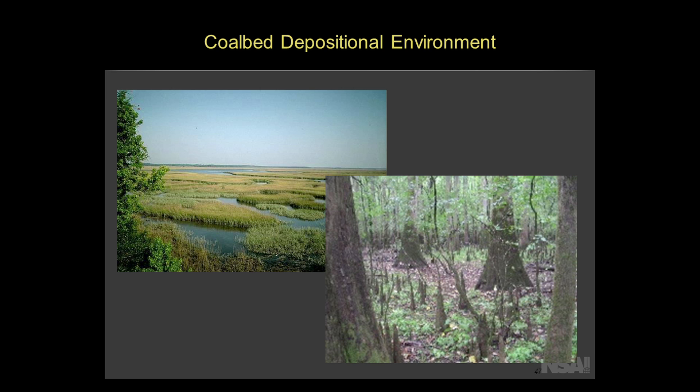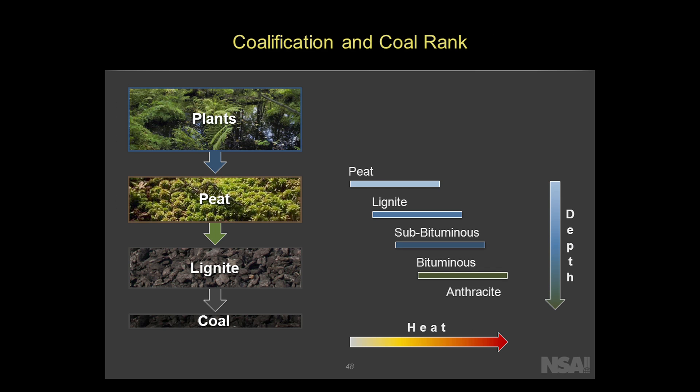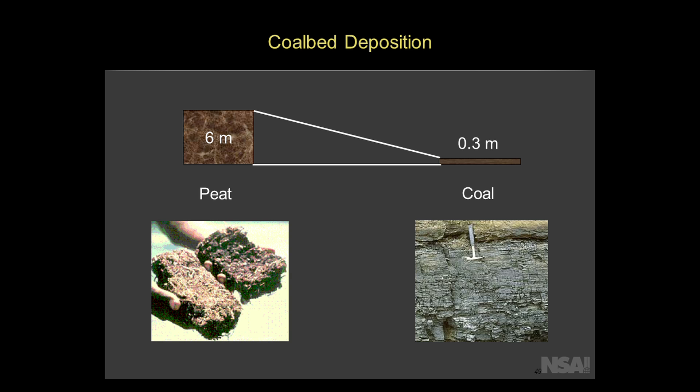Coal comes from vegetation — high carbon material that we see at surface — which is then subsequently buried progressively from plants to peat to lignite to coal. So it takes a lot of time, a lot of pressure, and a lot of depth. There are different types of coal depending on what the depth is and how mature it is. If you take peat, which is the early stage of formation of coal, it may start with six meters, and under the pressure and depth that it's buried, it finishes up at 0.3 meters — so there's a tremendous amount of compression needed.